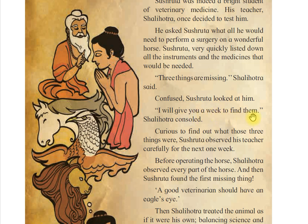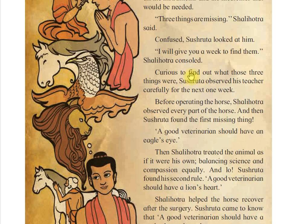Shalihotara said, I will give you a week to find them. So the teacher gave Sushruta one week to find out what else is required to perform a surgery. Curious to find out what those three things were, Sushruta observed his teacher carefully for the next one week.